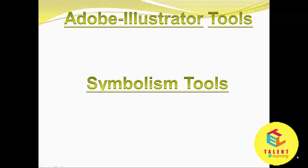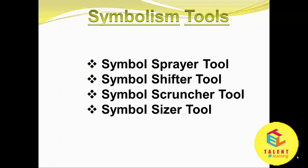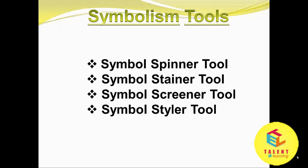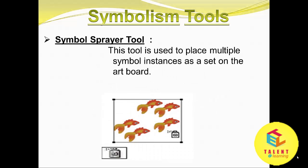Welcome friends. In this tutorial we will talk about the Symbolism tool of Adobe Illustrator. The symbolism tools include: Symbol Sprayer tool, Symbol Shifter tool, Symbol Scruncher tool, Symbol Sizer tool, Symbol Spinner tool, Symbol Stainer tool, Symbol Screener tool, and Symbol Styler tool. Now we will discuss each of these tools.